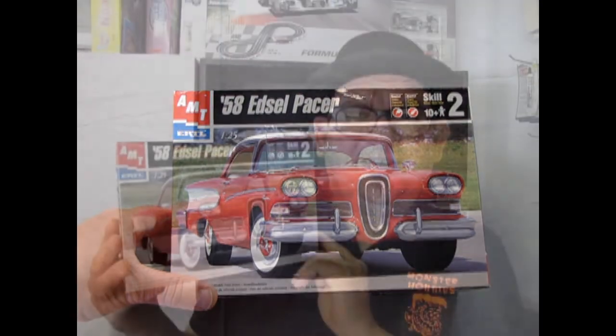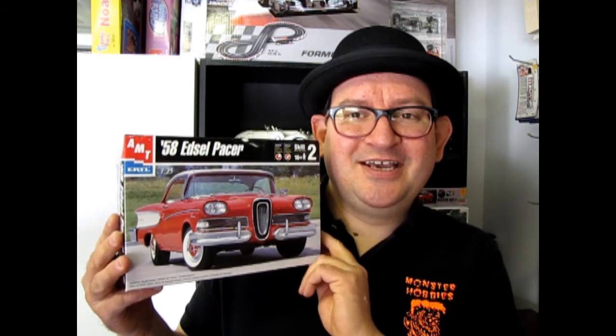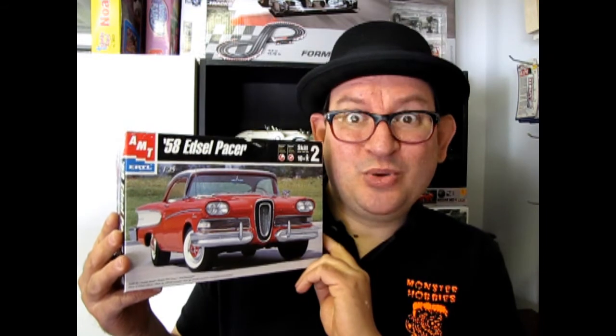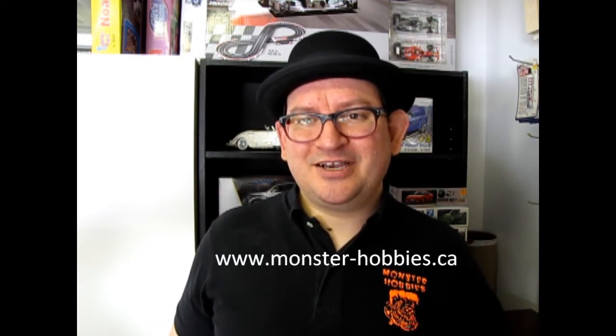Well I hope you enjoyed that episode of Monster Hobbies What's in the Box, where we got to see the 1958 Edsel Pacer, Ford's idea of a competitor to Buick, believe it or not. Now if you would like to see what other amazing model kits I have available for sale, check us out at www.monster-hobbies.ca, and don't forget to subscribe to us here so you can check out our channels and ring that little bell to get your notifications. And check out these three other amazing unboxing videos, and until next time, keep dreaming of the space age.